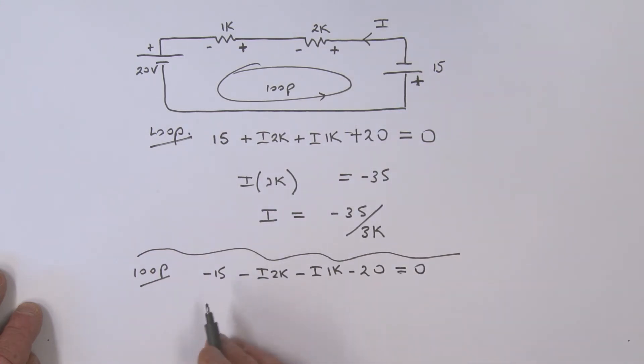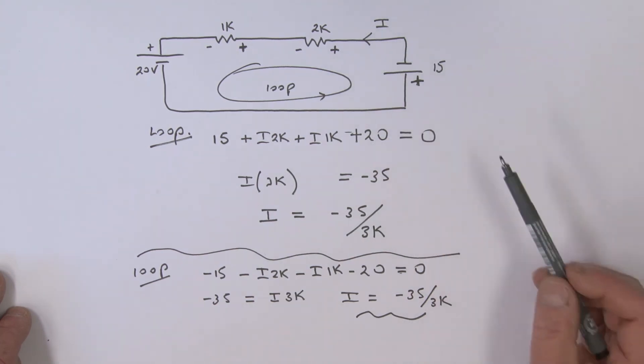So what are we going to do here? We're going to collect all our terms together. This minus 15, that's a minus 35, isn't it? I'm going to take my I's to the other side—it's equal to I×3K. And so from this we can say that I is equal to minus 35 divided by 3K, exactly the same answer as we had before.